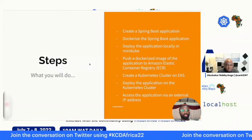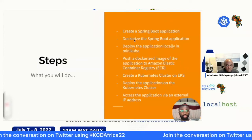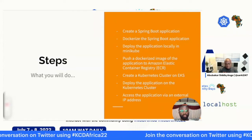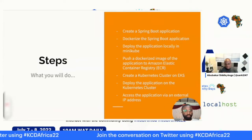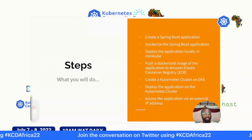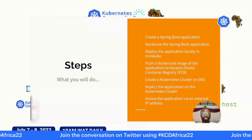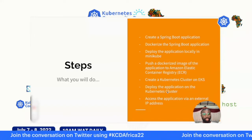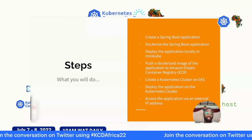The steps in this session: first, you create a Spring Boot application, then you dockerize it. After dockerizing, to understand how Kubernetes works before moving to EKS, we'll deploy the dockerized image locally on Minikube, which is a one-node Kubernetes cluster. Then we'll push the dockerized image to Amazon Elastic Container Registry, create a Kubernetes cluster on EKS, deploy the application from ECR to the cluster, and enable access via an external IP address.